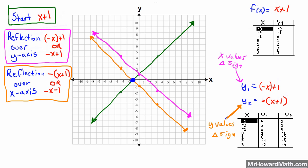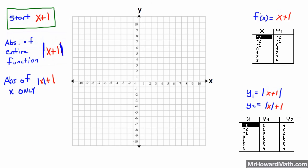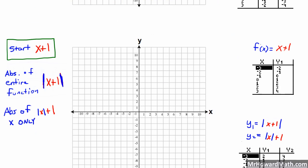That is reflections. Now let's go to absolute value. Let's look at our chart real quick. In absolute value, when we take the absolute value of the whole function, quadrants 3 and 4 are reflected over the X-axis and quadrants 1 and 2 remain the same. Then if we take the absolute value of X only, we are symmetrical about the Y-axis, which means quadrants 1 and 4 are reflected over the Y-axis and quadrants 2 and 3 are removed.